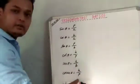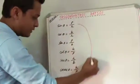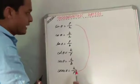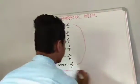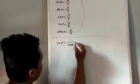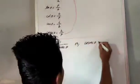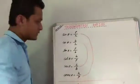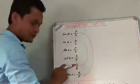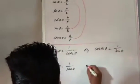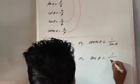So if you observe these formulas, you will get that sin θ and cosec θ are the reciprocal of each other, as P by H is the reciprocal of H by P. Sin θ is the reciprocal of cosec θ, or cosec θ is the reciprocal of sin θ. In the same way, cos θ and sec θ are reciprocals of each other, because B by H is the reciprocal of H by B. That means cos θ is the reciprocal of sec θ, or sec θ is the reciprocal of cos θ.